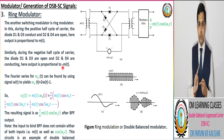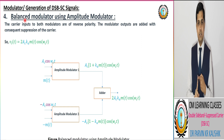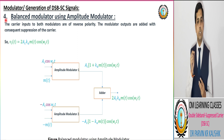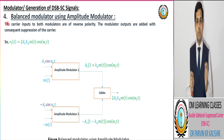Up to this point, we covered: first, the multiplier modulator; second, the non-linear modulator; third, the switching modulator — in which we have three types: series bridge, shunt bridge, and ring modulator. Now we have the fourth DSB-SC modulator, known as the balanced modulator using amplitude modulator.